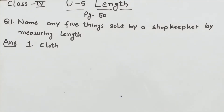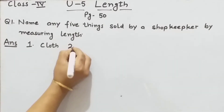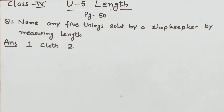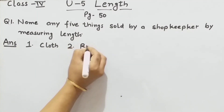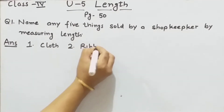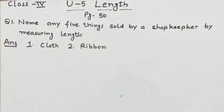जल्दी से दूसरी items guess करो। Next item क्या होगी? Ribbon — ribbon जब हम purchase करते हैं तो उसकी length को measure करके हम खरीदते हैं। वन मिटर लेना है, टू मिटर लेना है — इस तरह से ribbon की length को measure करके ribbon को खरीदा जाता है।